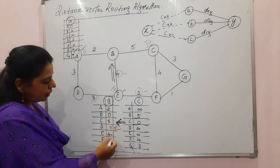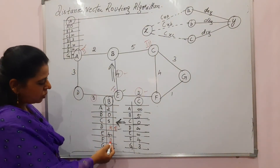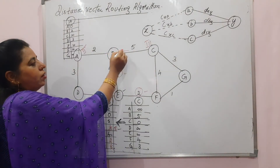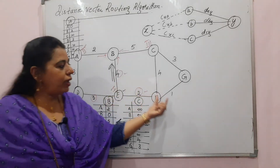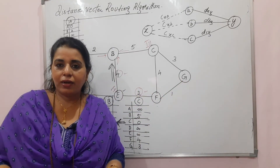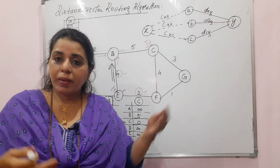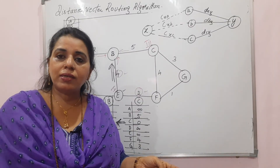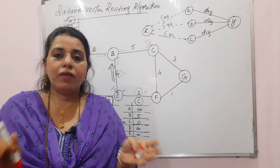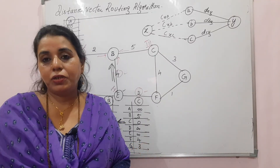After B received from its neighbors A, C, and E, the values that were previously infinity in B's routing table have now received certain finite values. This is how each node receives distance vectors from its neighbors and keeps updating. This algorithm is iterative — many iterations happen until there is nothing more to update in the distance vector. When everything is finalized with no further changes, that becomes the final routing table for each node.